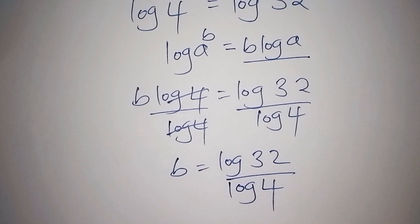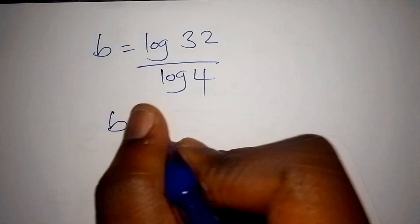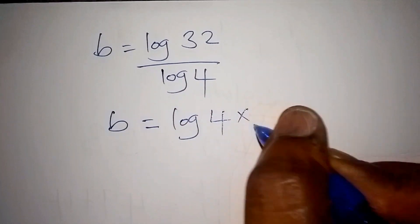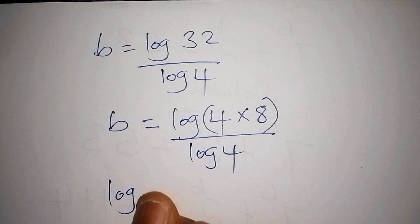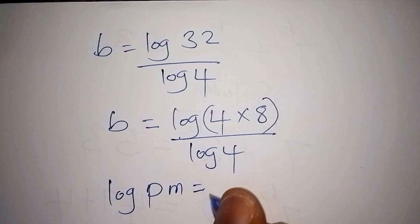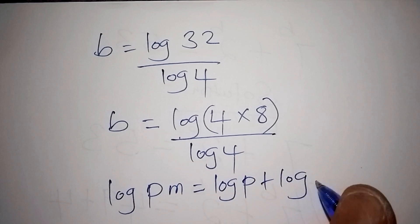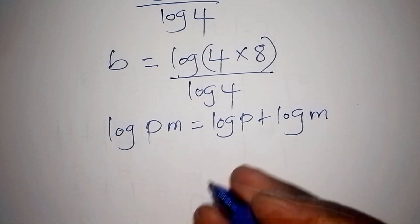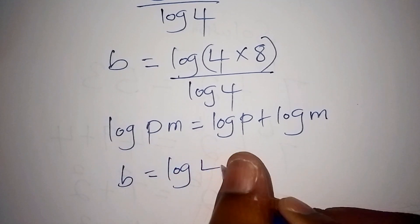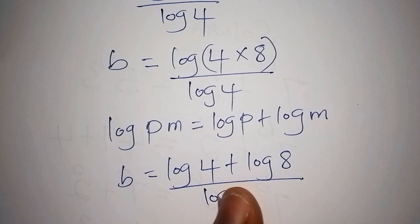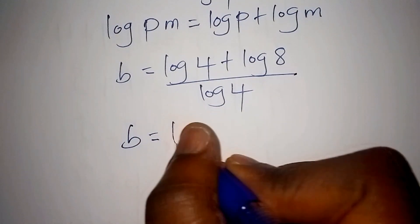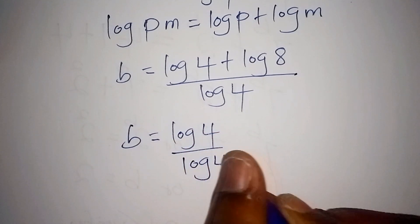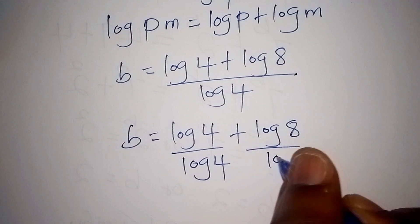This is not the final answer, so let us continue simplifying. Now log of 32 can be written as log of 4 multiplied by 8, all over log of 4. Using the log product rule — log of pm equals log p plus log m — our b becomes log of 4 plus log of 8, all over log of 4. Splitting the fraction, b equals log 4 over log 4, plus log 8 over log 4.